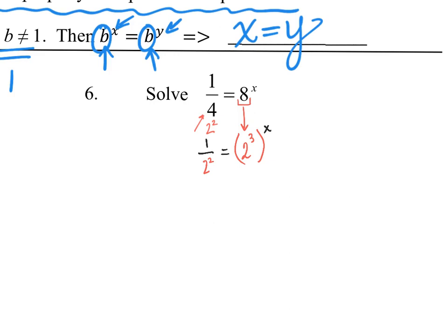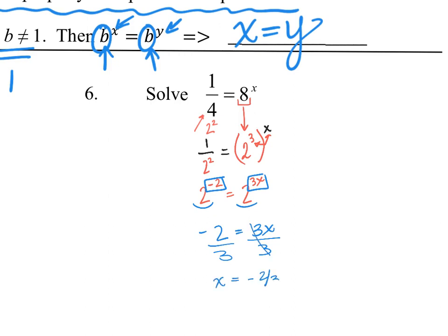I want to rewrite one over two squared. If I want to flip it, remember we can do that by having a negative exponent. Using our property of exponents that when you have a power to a power you multiply, this becomes two to the negative two, raised to the x, giving two to the three x. Now we have the same bases, so the exponents have to be equal: negative two equals three x. Dividing by three, we get x equals negative two thirds.